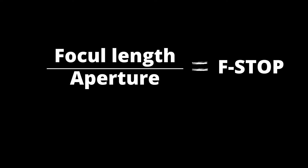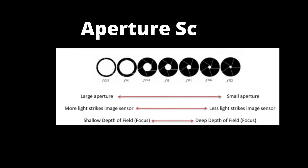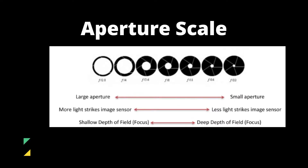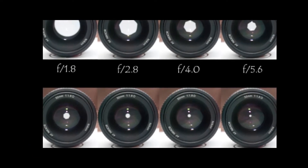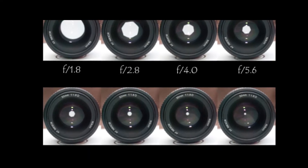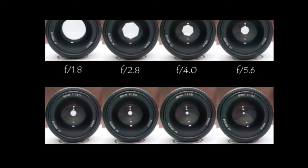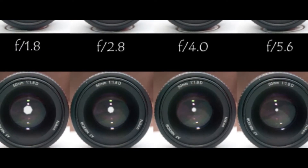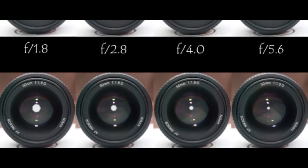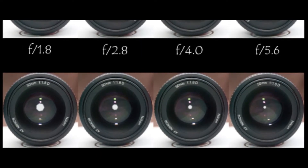F-stops are f/1.4, f/2, f/2.8, f/4, f/5.6, f/8, f/11, and f/16. When you use f/1.8, as you can see in this picture, it is totally open — it allows the most light to enter the camera so that you get a bright image.